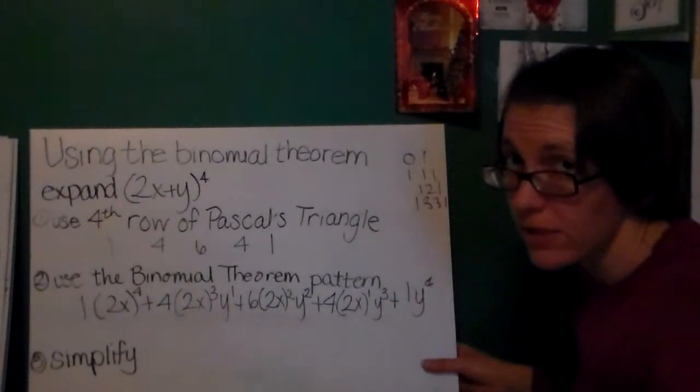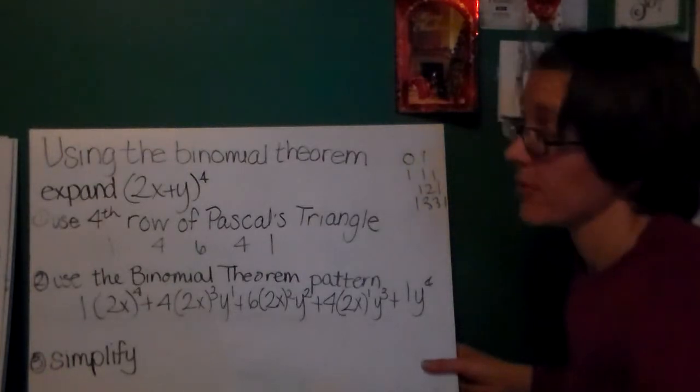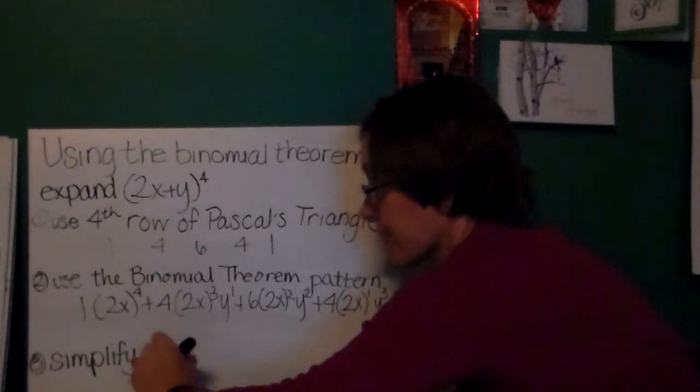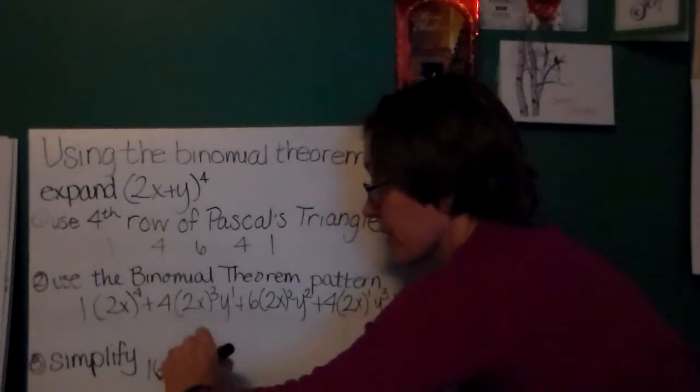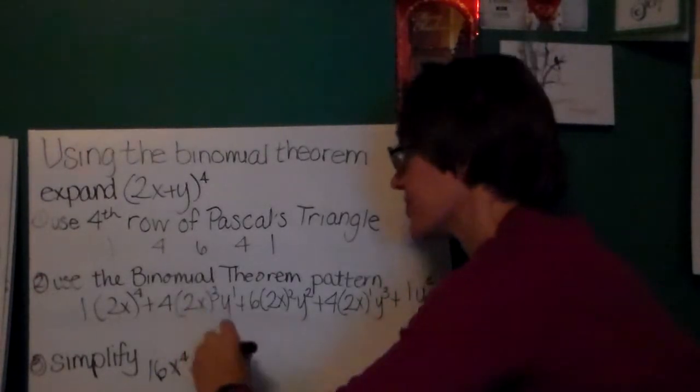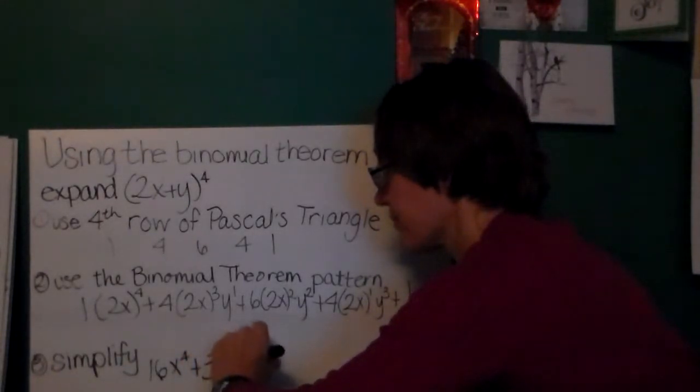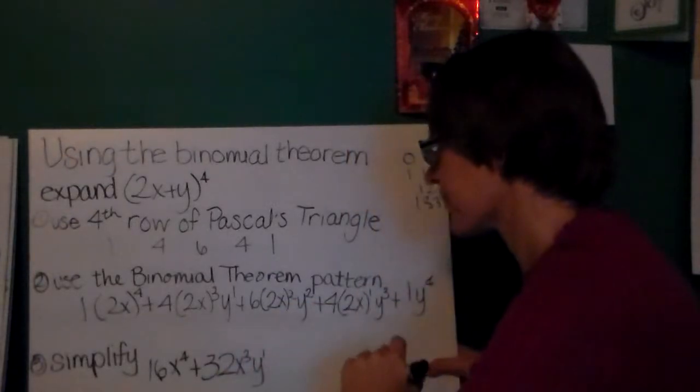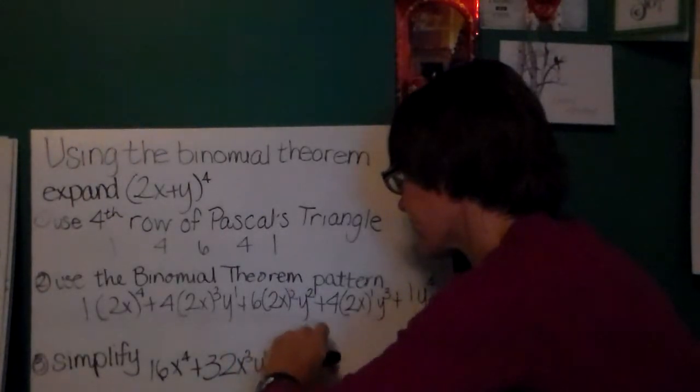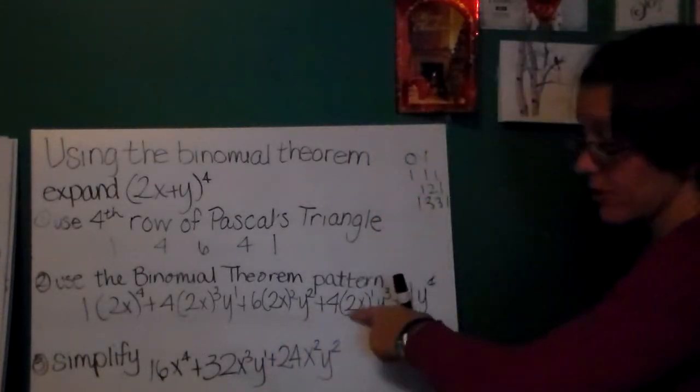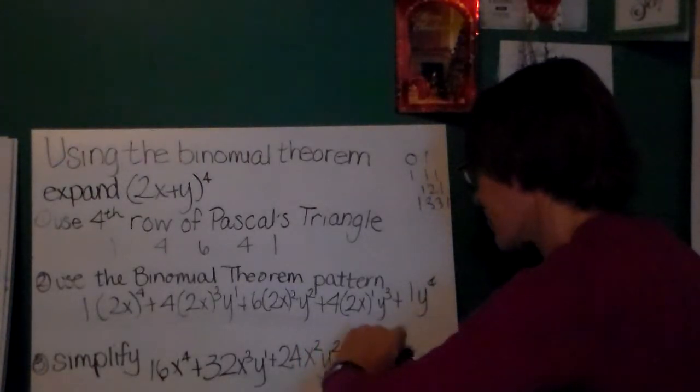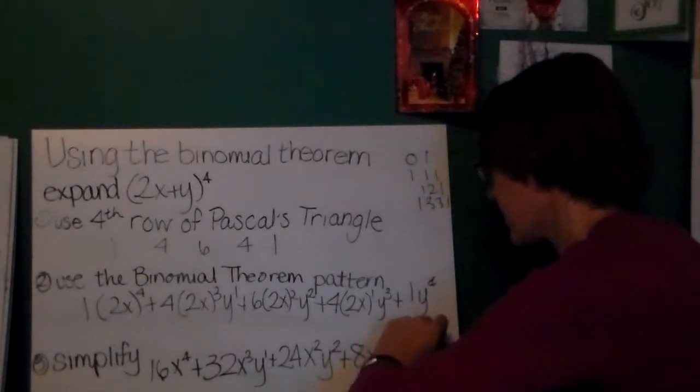Now, you may think that this is a lot of writing to do, but trust me, if I made you multiply all this out by hand, it would really be even more painful. So 2x to the 4th, I'm going to simplify to get my final answer, is 16x to the 4th. 2x to the 3rd is going to be 8x to the 3rd. 4 times 8 is 32 x to the 3rd y to the 1st. Then I have 2x squared. Well, that's 4x squared, times 6 is 24x squared times y squared. Then 2x to the 1st is just 2x, times 4 is 8x y to the 3rd, plus 1, y to the 4th.